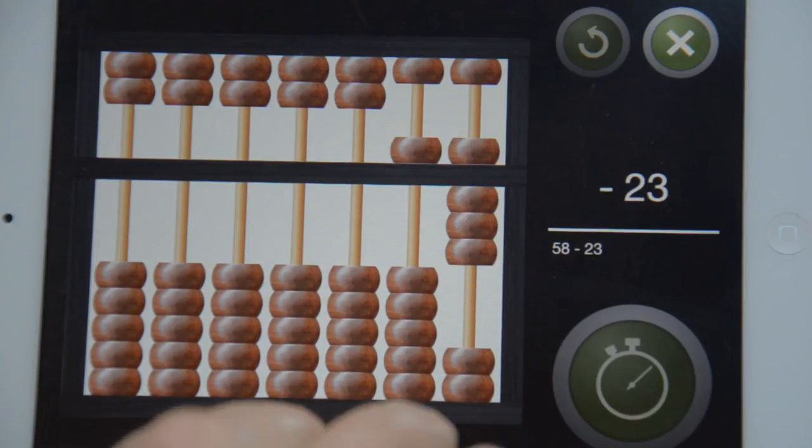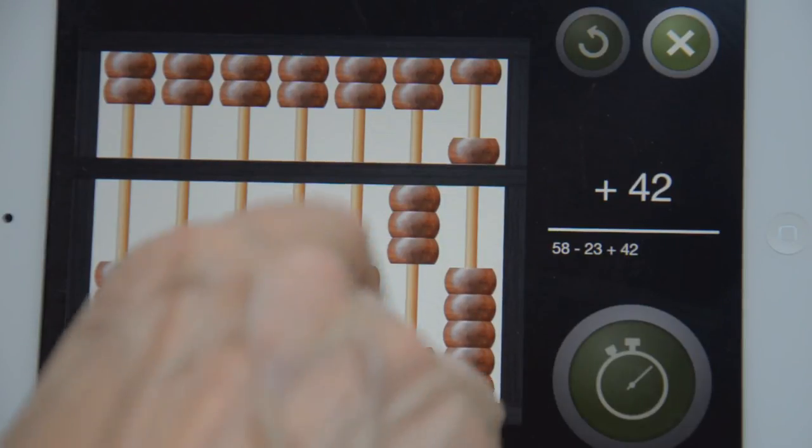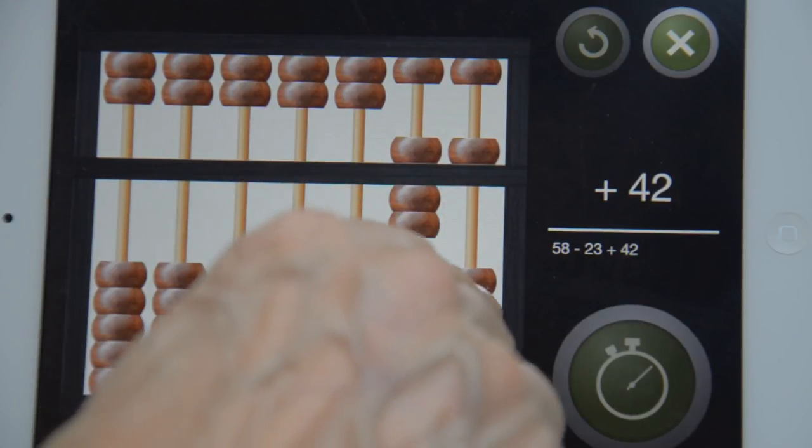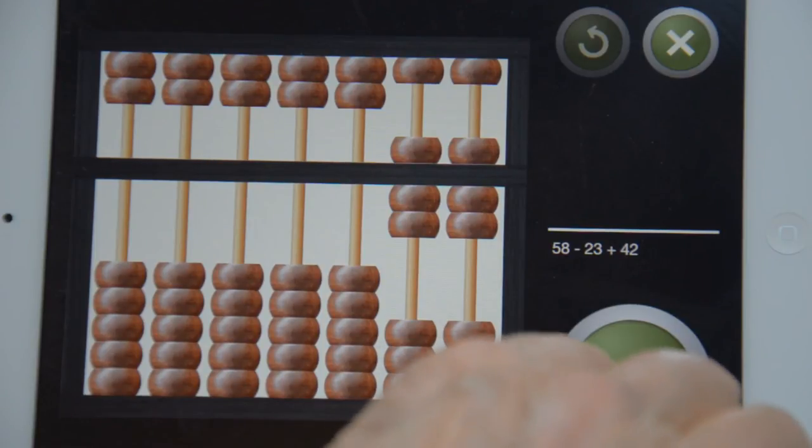58, minus 23, I use the complementary, plus 42. As you see I use the complementary method that you can see in the tutorials.